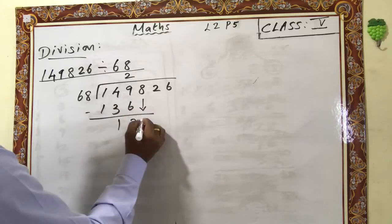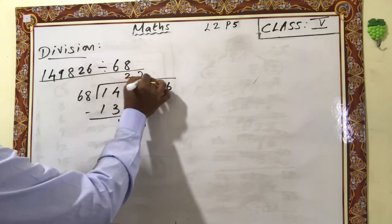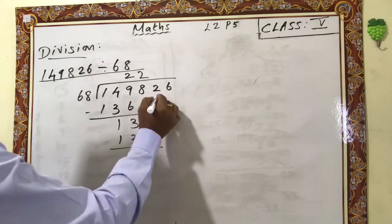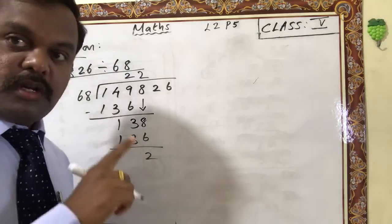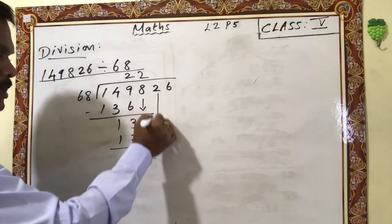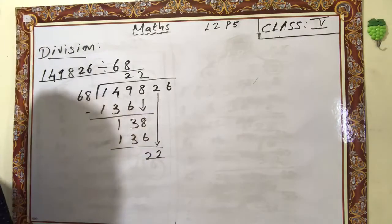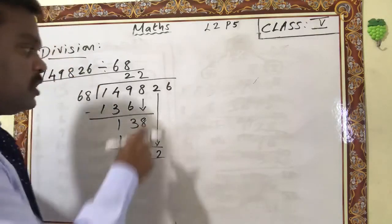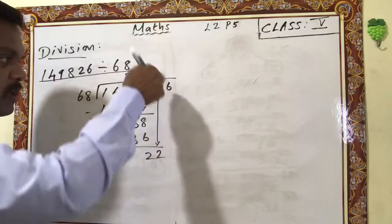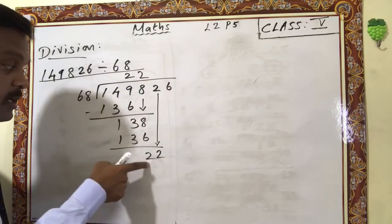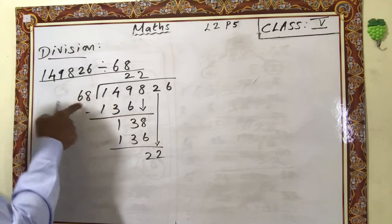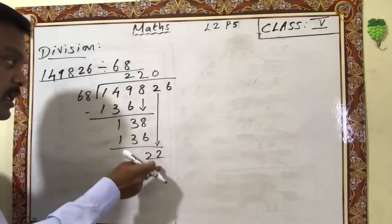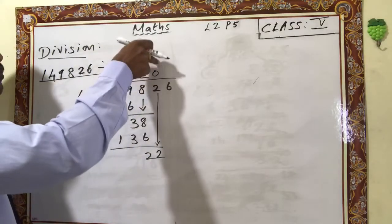Bring down the next number — 3, giving 334. Then 2 × 68 is 136, balance 2. Okay, bring the next number down: 2. Now 22 — 22 is lesser than 68, we can't divide. So if you bring down any number and that number is not divisible by the divisor, you have to put one zero in the quotient. This is the concept: if the brought-down number is not divisible by the divisor, add one zero in the quotient.